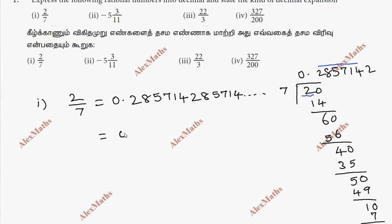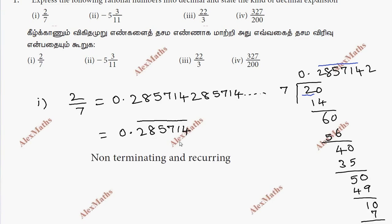So the result is 0.285714, with a bar at the top. If you continue, you see the same numbers repeat — this is non-terminating and recurring.